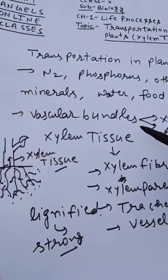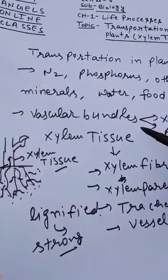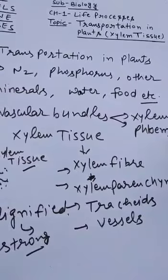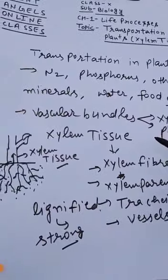We use the vascular bundles, also called vascular tissues. Vascular tissues are of two types: one is xylem tissue and one is phloem tissue. We are talking about xylem tissue and phloem tissue. Let's talk about xylem tissue.